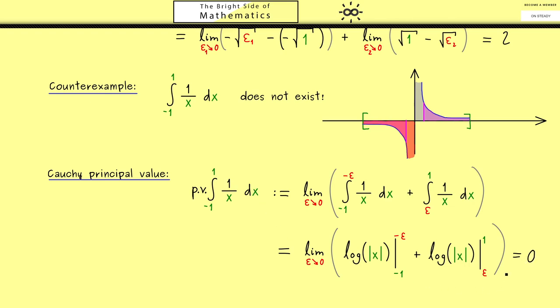Hence, in fact, the Cauchy principal value of this integral is exactly zero. So in summary, you can remember the improper Riemann integral of the function one over x from minus one to one does not exist.